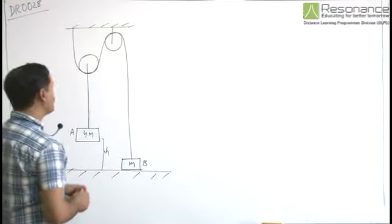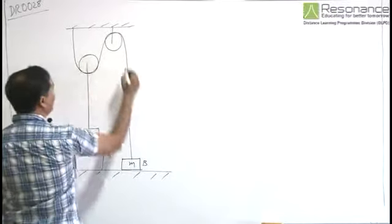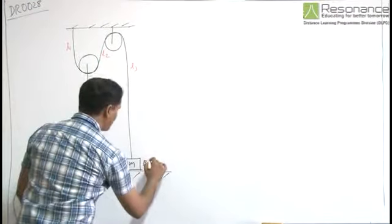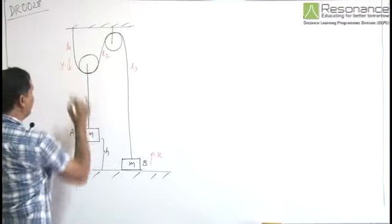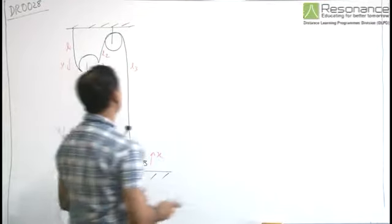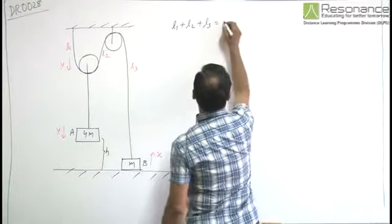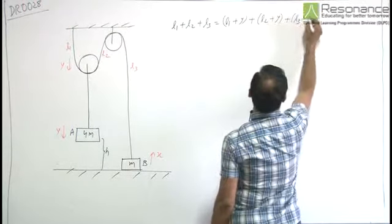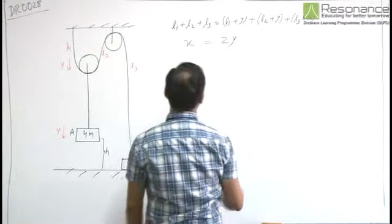From constraint relations, if this length is L1, L2 and L3, we displace B by x upward and pulley by y downward such that A moves by y downward. Then from constraint relation, we can write L1 plus L2 plus L3 is equal to L1 plus y plus L2 plus y plus L3 minus x, or x is equal to 2y.